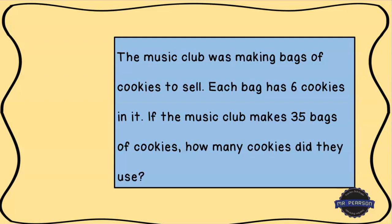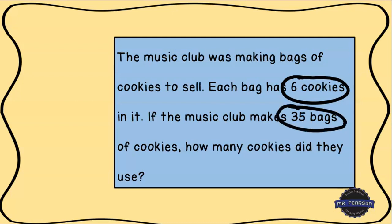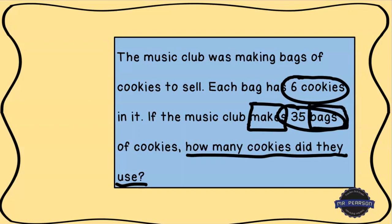The first thing we always want to do is circle our numbers. I see the number six — as in six cookies — and then we have 35 bags. So we've circled our numbers. Now we want to underline our question, and that question is: how many cookies did they use? I'm going to box some keywords — words that stand out to me as helpful. I see that they made — that tells me there's a group — the word bags again, telling me there's groups, and then the phrase how many.